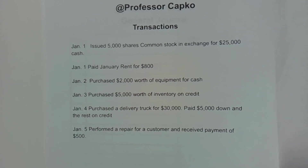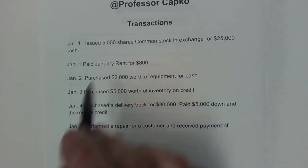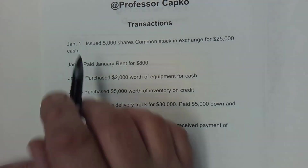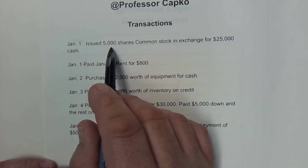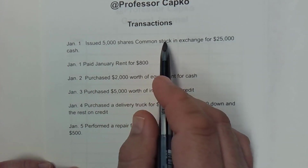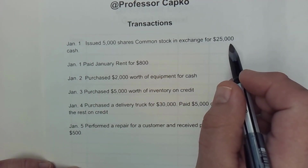I've got some example transactions here that we're going to put into our general journal, and we're going to take them one at a time. The first one occurs on January 1st and the company issued 5,000 shares of common stock in exchange for $25,000 cash.